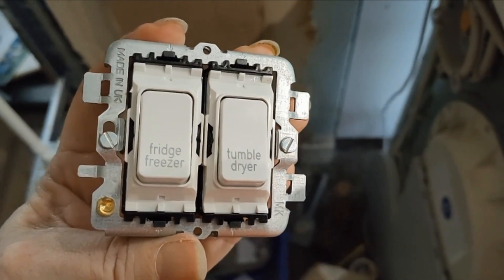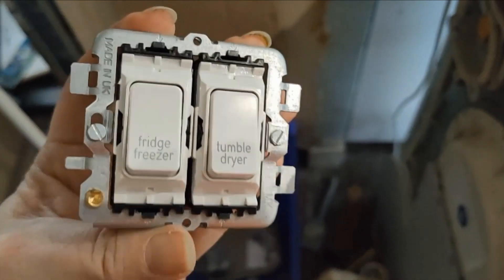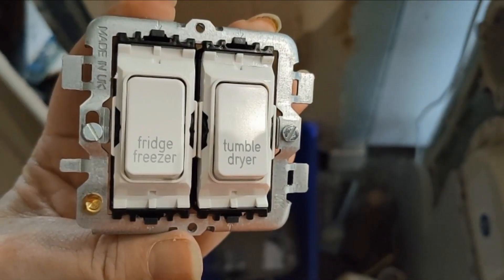OK, so as you can see we've got the fridge freezer and the tumble dryer switches mounted in their bracket ready to go in.